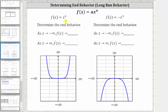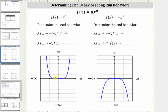Notice that for these first two examples, the degrees of the power functions are even. Our first function is f(x) = x⁶. As x approaches negative infinity, or as we move to the left along the graph, the graph goes up, and therefore the y values approach infinity. As x approaches positive infinity, or as we move to the right, the graph goes up, and therefore f(x) approaches positive infinity.